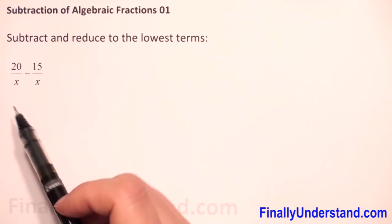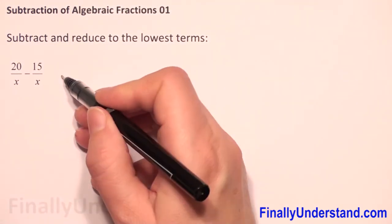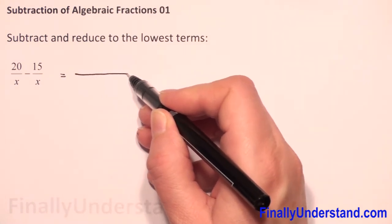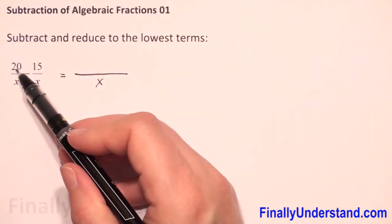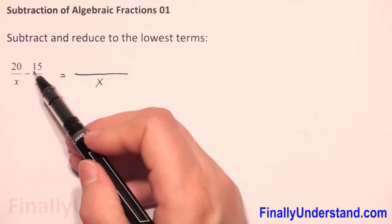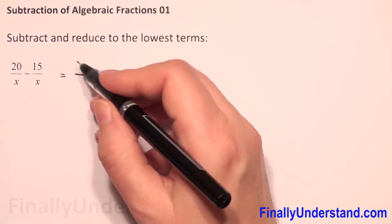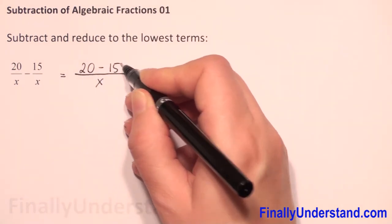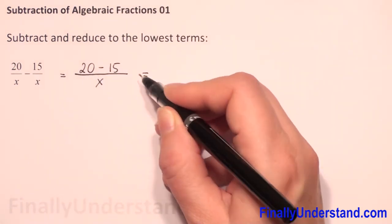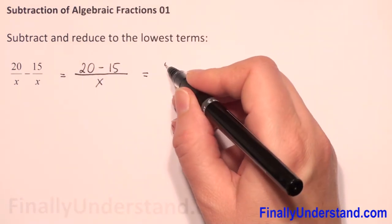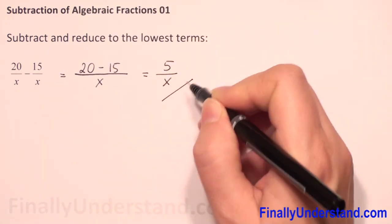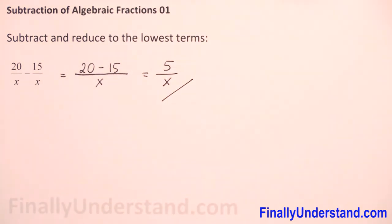In this example we have x and x. So what we have to do? We have to copy the numerator and we have to subtract numerators. So we have 20 minus 15. So 20 minus 15 is 5 over x. This is my solution.